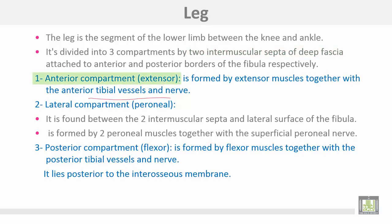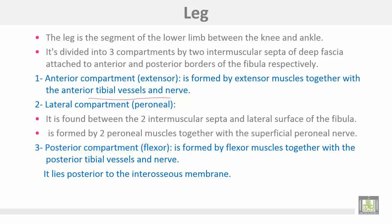The anterior compartment, or extensor, is formed by extensor muscles together with the anterior tibial vessels and nerves. The lateral compartment, or peroneal, is found between two intermuscular septa and the lateral surface of the fibula, formed by two peroneal muscles together with the superficial peroneal nerve. The posterior compartment, or flexor, is formed by flexor muscles together with the posterior tibial vessels and nerves, and lies posterior to the interosseous membrane.